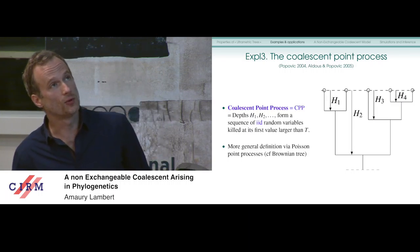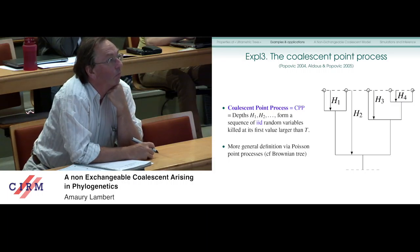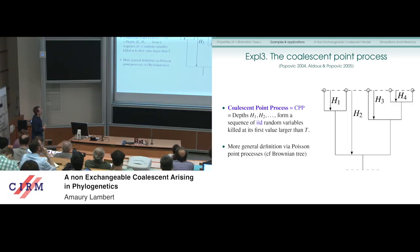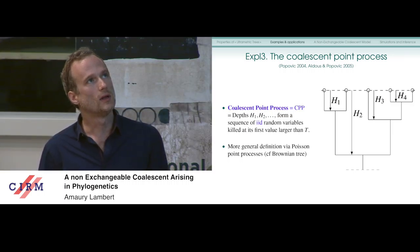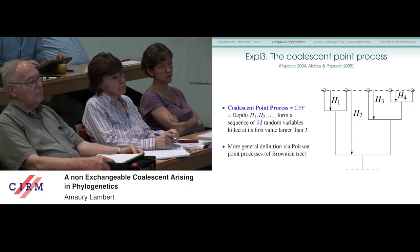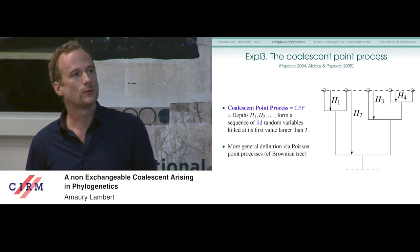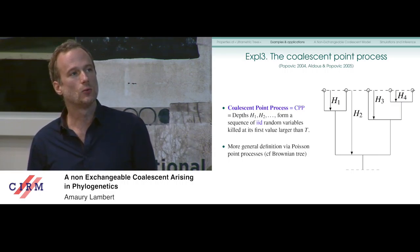My favorite example — the third one — is the coalescence point process. Here the comb is taken by IID random variables until the first value larger than capital T. The structure it induces on the interval is an ultrametric tree, and we call it a coalescence point process, as Léa and David coined the term. There's a more general definition, replacing these IID random variables by a Poisson point process, correctly stopped — exactly as in the Brownian tree — by throwing a Poisson point process with intensity dx dy / y².